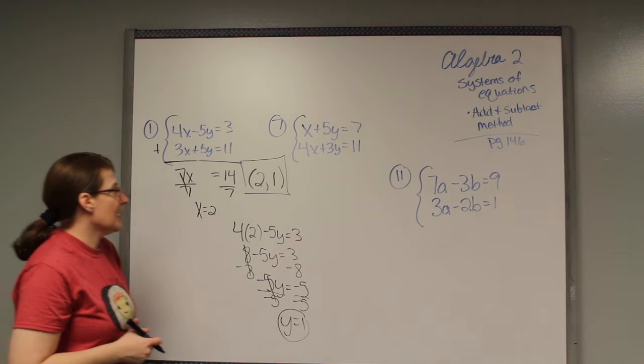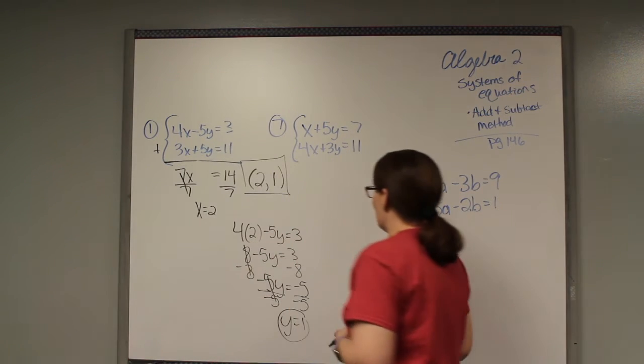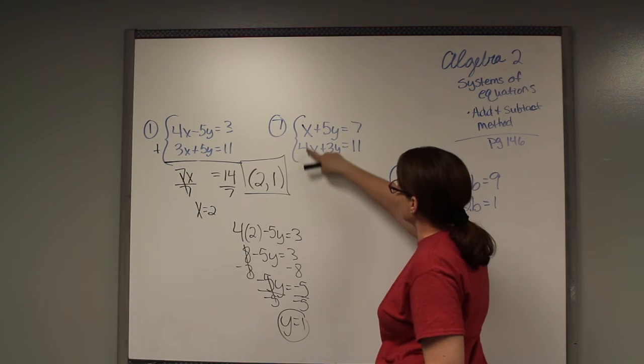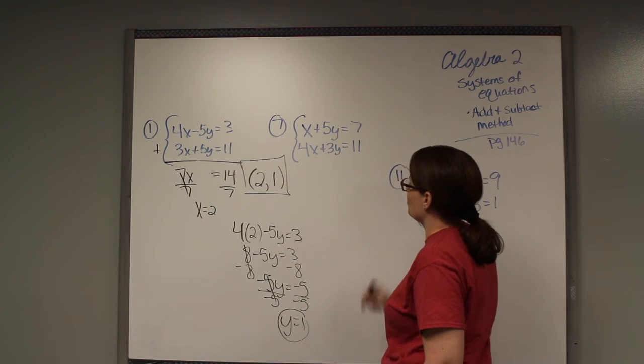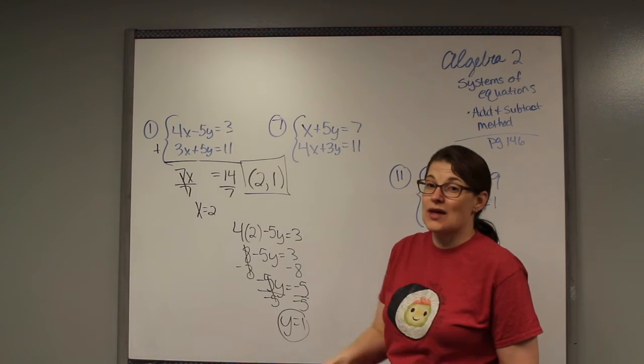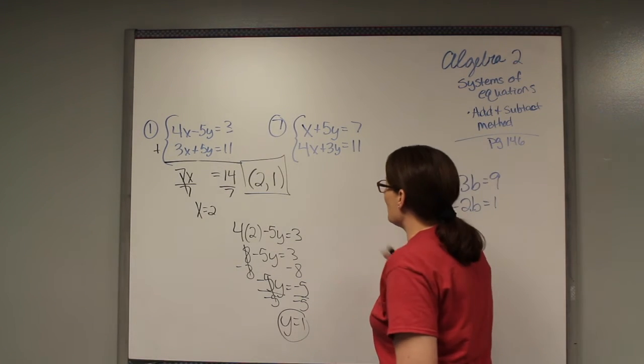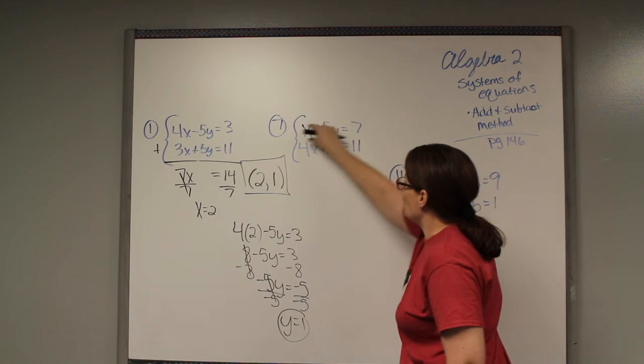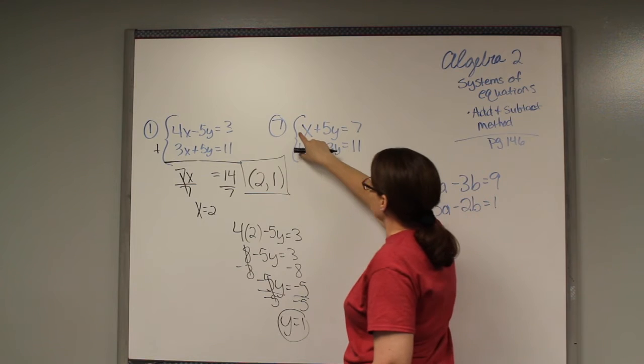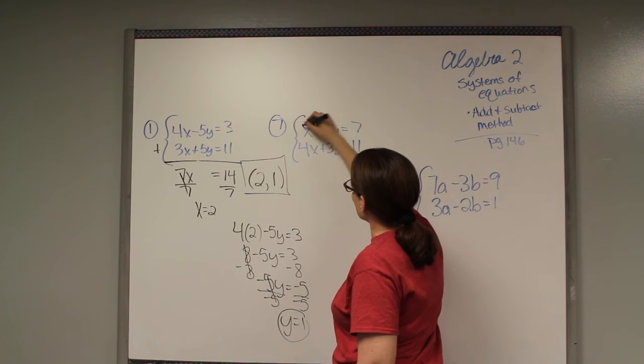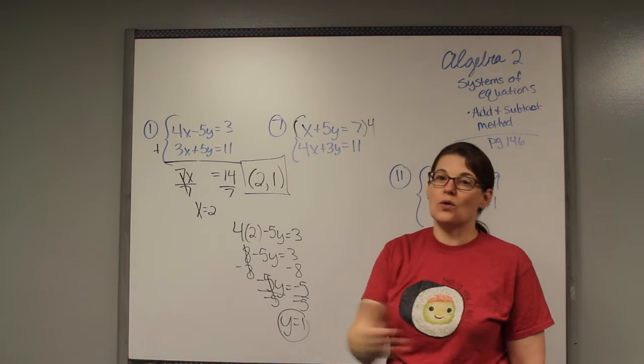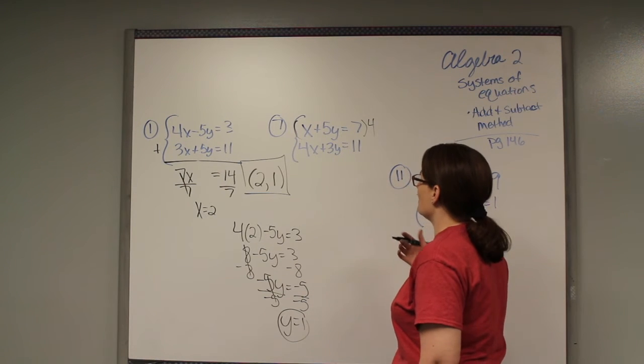We're going to look at 7 and find out what happens if you don't have one that matches. On 7, I have an x and a 4x, and I have a 5y and a 3y. I need one of them to match numbers. To do that, I have to multiply the whole equation. If this is a 4, and I want this to be a 4, I need to multiply this top equation by 4.